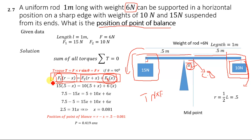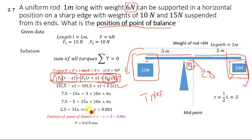Now we solve the equation. F1 is 15 newton, so we have: 15 × (0.5 − x) = 10 × (0.5 + x) + 6 × x. Solving this equation for x, we get x = 0.081 meter. This x is the distance from the center of the rod to the position of the point of balance.